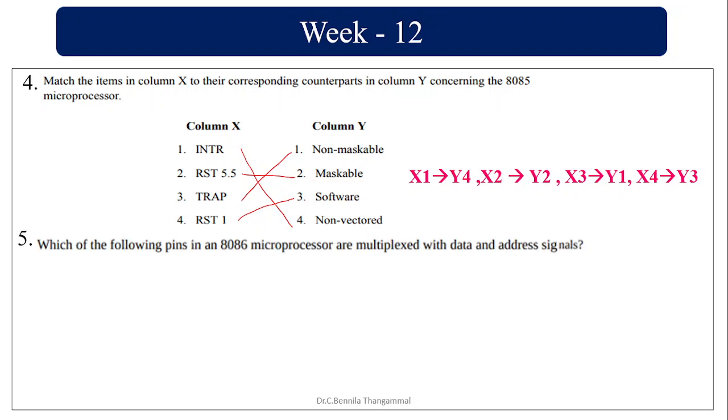Which of the following pins in 8086 microprocessor are multiplexed with data and address signals? In 8086, it has 16-bit address, data and 20 address lines. So AD0 to AD15 is multiplexed.